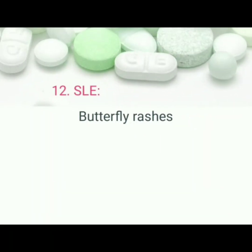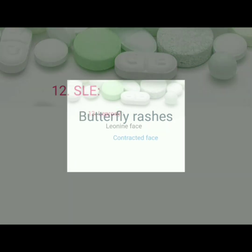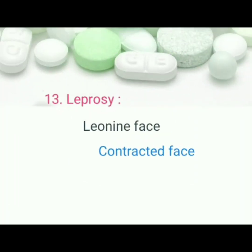SLE, systemic lupus erythematosus: pathognomonic sign is butterfly rash. Leprosy: pathognomonic sign is leonine face, contracted face.